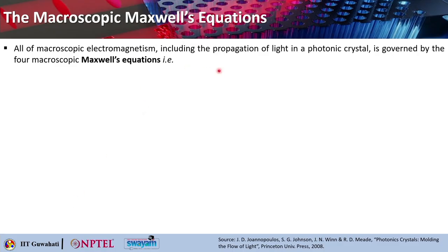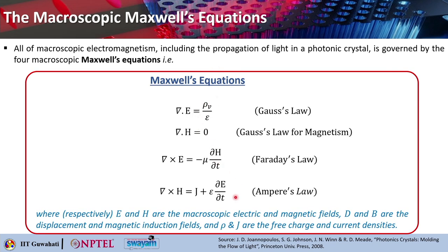Macroscopic Maxwell's equations: all of macroscopic electromagnetism, including the propagation of light in a photonic crystal, is governed by the four macroscopic Maxwell's equations. As a quick recap: del dot E equals rho_V over epsilon, that is Gauss' law; del dot H equals 0, that is Gauss' law for magnetism; Faraday's law is written as curl of E equals minus mu dH/dt; and Maxwell-Ampere law is written as curl of H equals J plus epsilon dE/dt.